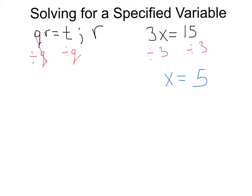So, we divide by q. Those are going to cancel each other out, and we're going to be left with r equals. Now, since we can't divide this t and q like we did this 15 and 3, all you need to do is leave it. So, this will be t over q. Now, notice we have our r all by itself, and this is going to be our answer.